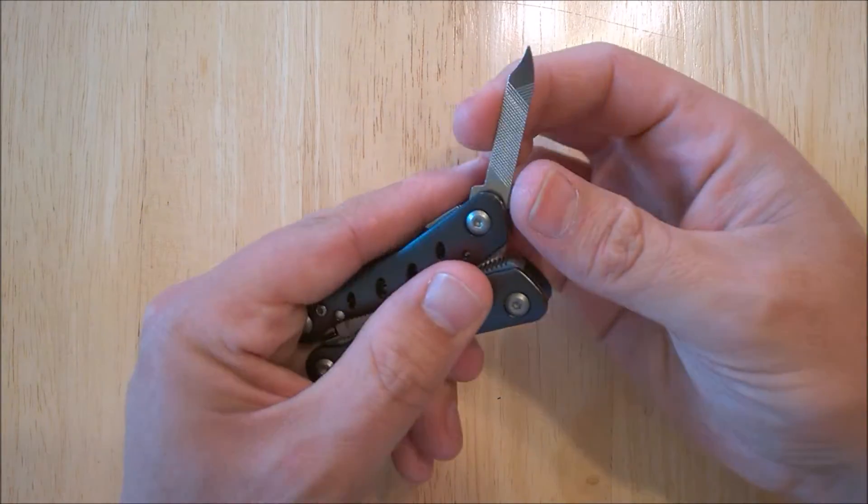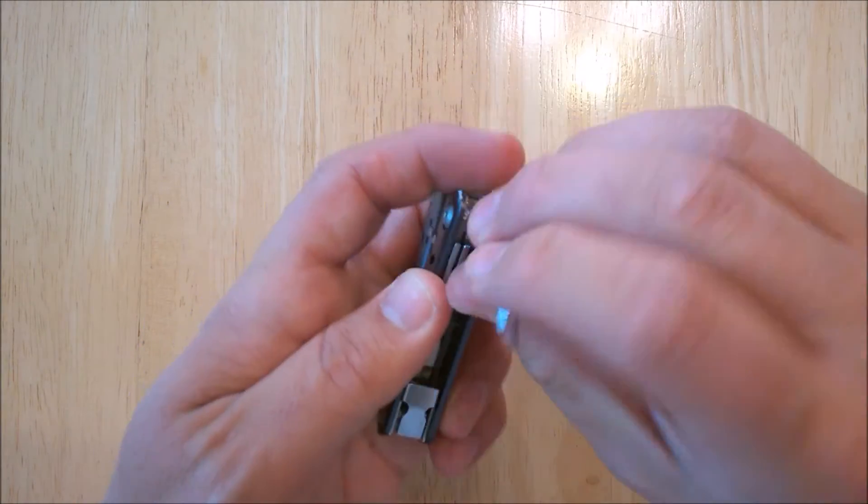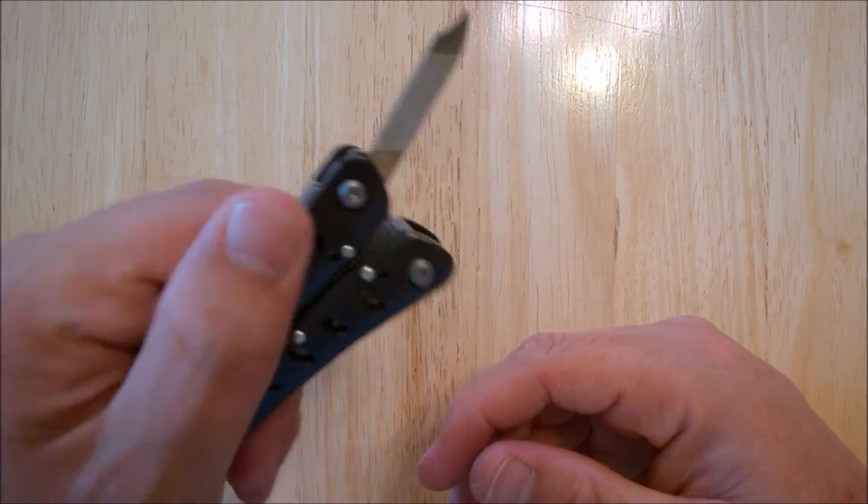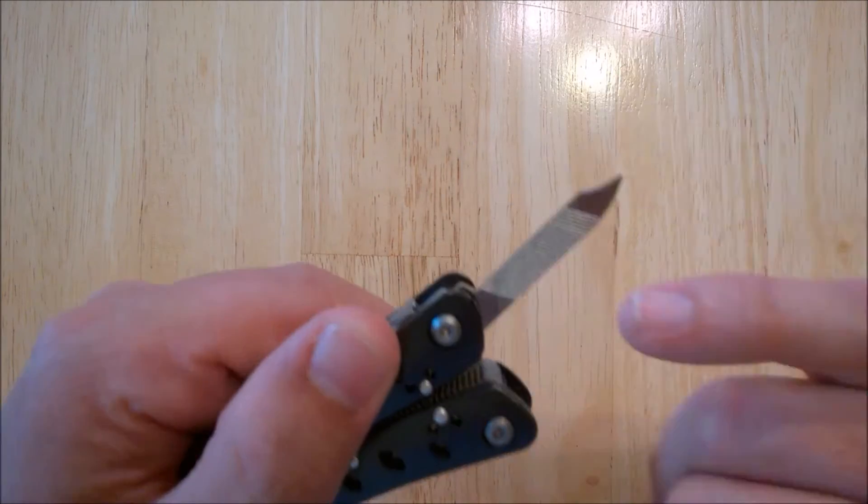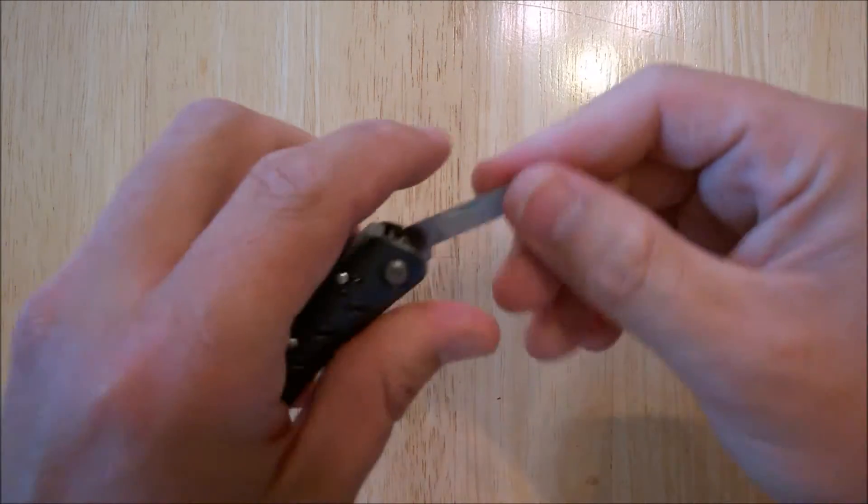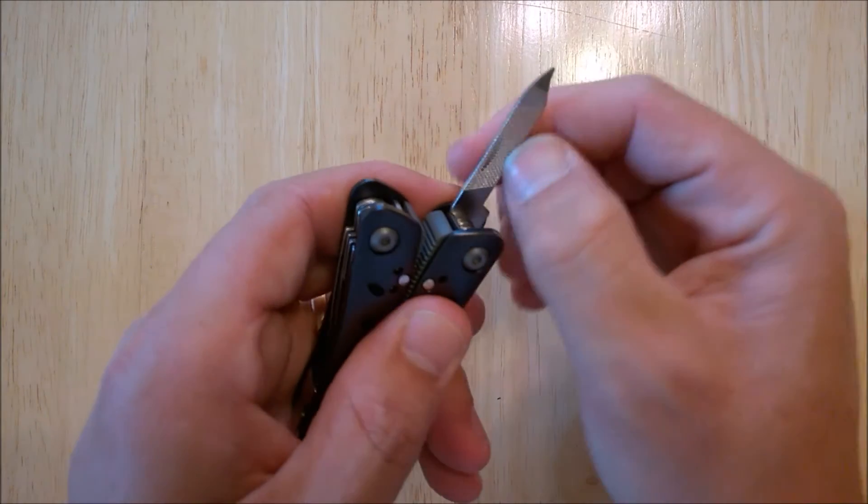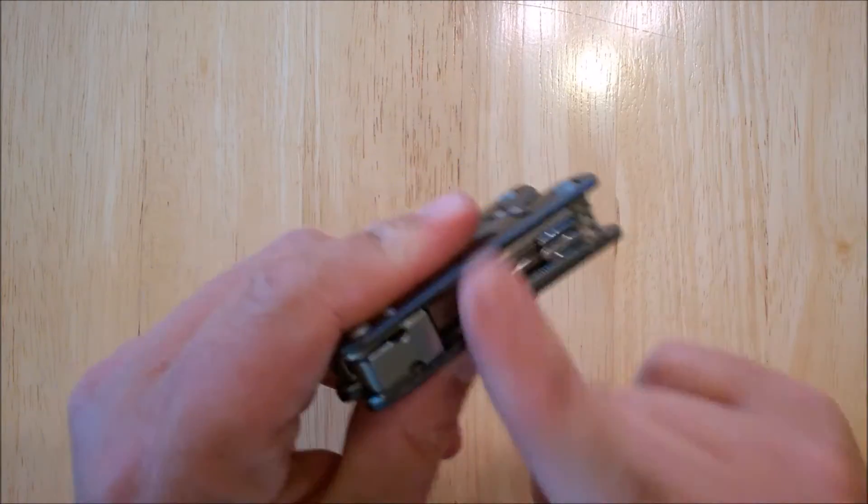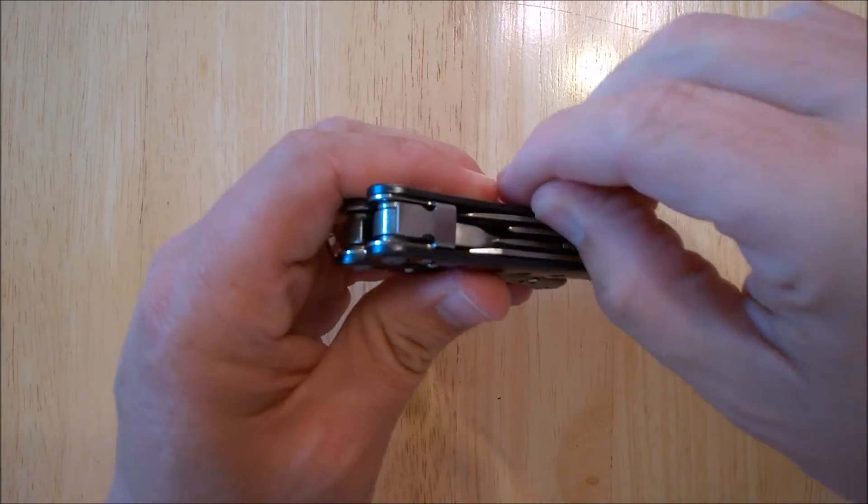And the last one on this side is a file. It looks very much like a fingernail clipper file. You know, it's got the cleaning tool right at the end there to go along and clean your nails and a file to file on them or you can file whatever else you want. Those are the tools on that side.